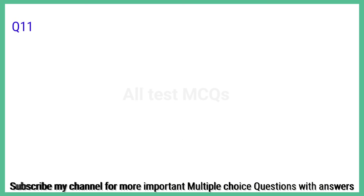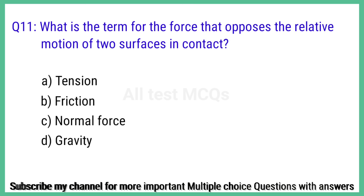Question number 11. What is the term for the force that opposes the relative motion of two surfaces in contact? The correct answer is option B: Friction.